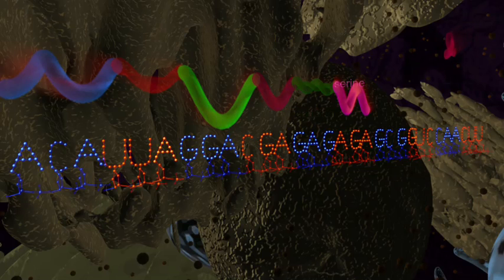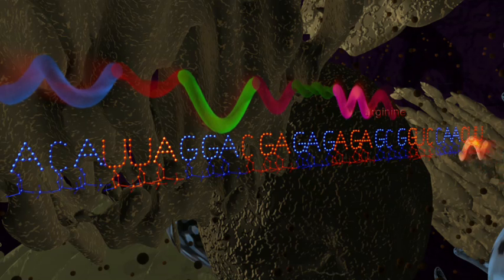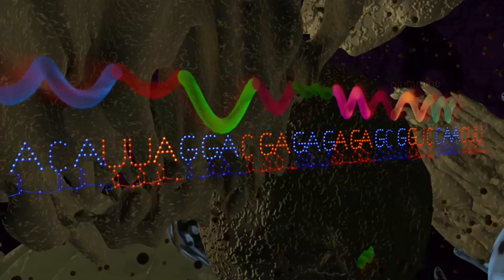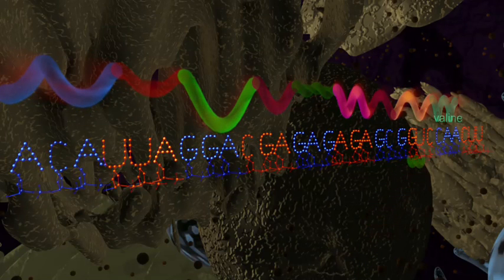As each correct amino acid is fitted into place, it joins itself to the one in front. These giant molecules of connected amino acids are called proteins. Some may contain thousands of amino acids.